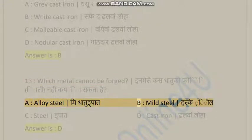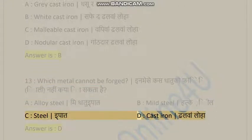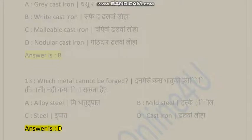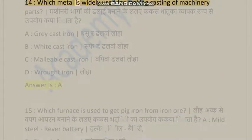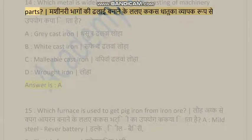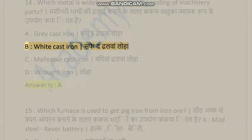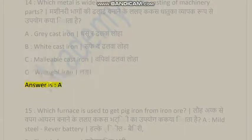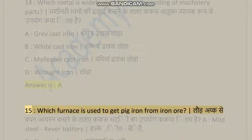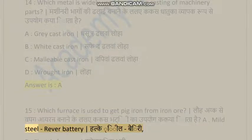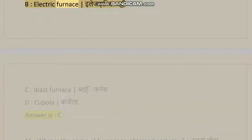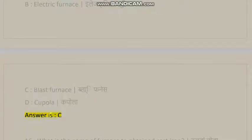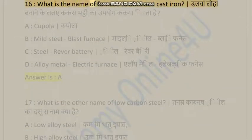Question 13: Which metal cannot be forged? A) Alloy steel, B) Mild steel, C) Steel, D) Cast iron. Answer is D. Question 14: Which metal is widely used for making castings of machinery parts? A) Gray cast iron, B) White cast iron, C) Malleable cast iron, D) Wrought iron. Answer is A. Question 15: Which furnace is used to get pig iron from iron ore? A) Reverberatory furnace, B) Electric furnace, C) Blast furnace, D) Cupola. Answer is C.